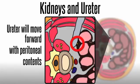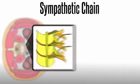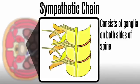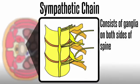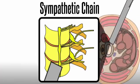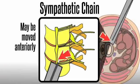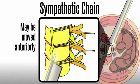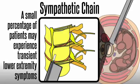Retractors may be used to directly visualize and protect the ureter. The sympathetic chain consists of ganglia on both sides of the spine and may be injured when approaching obliquely. If visualized, the sympathetic chain may be moved anteriorly using a blunt dilator to move soft tissue from the anterior psoas to the anterior longitudinal ligament. A small percentage of patients may experience transient lower extremity symptoms such as leg warmness if the chain is injured.